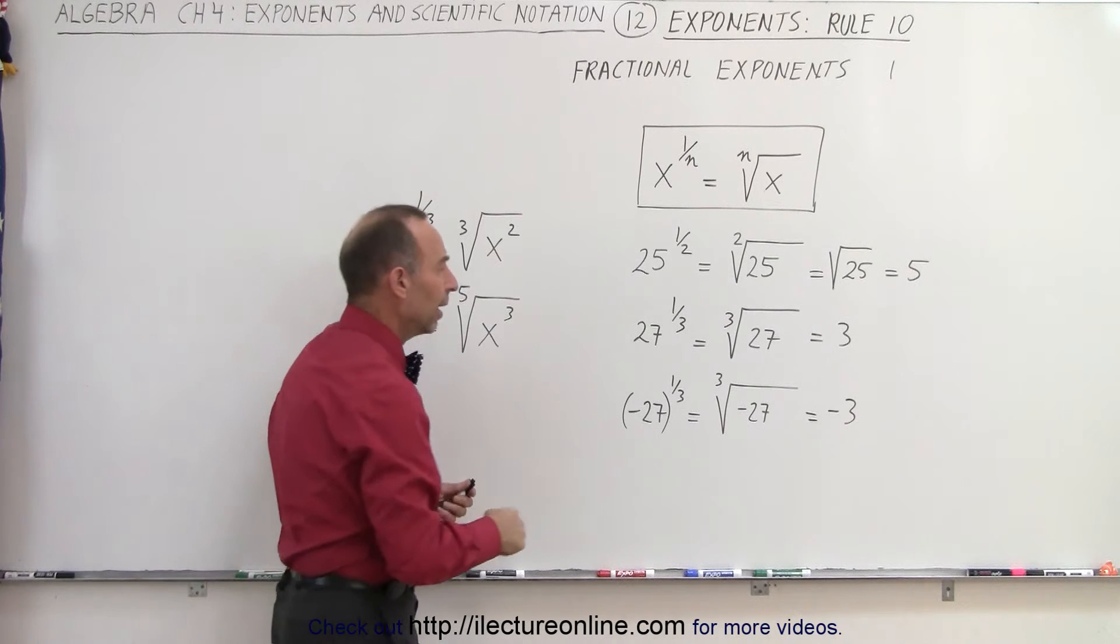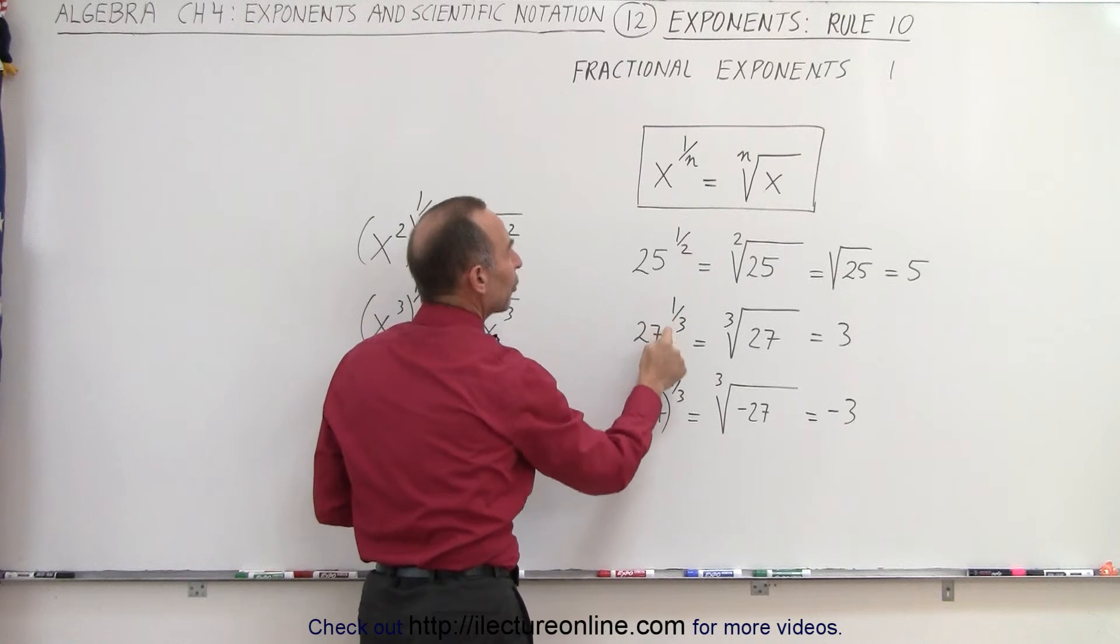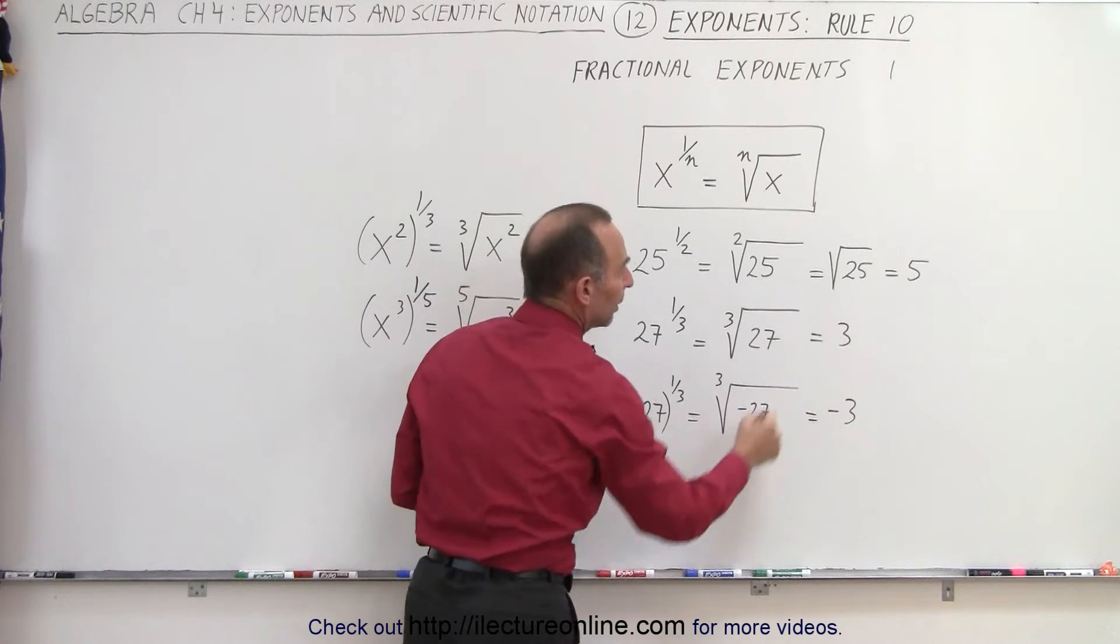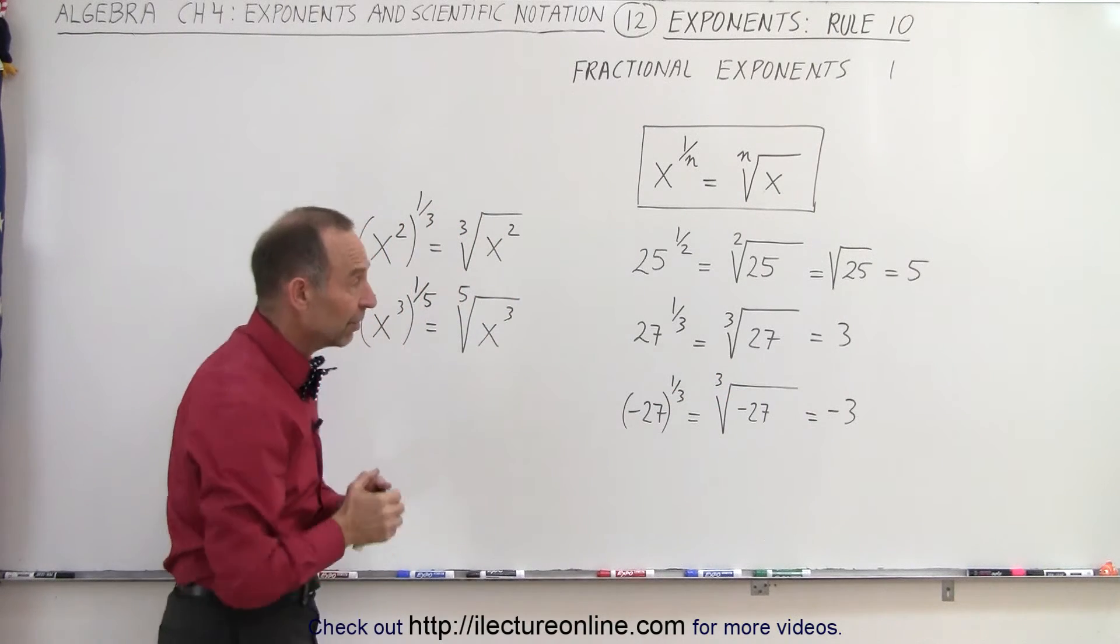To illustrate it better, 27 raised to the 1 third power is equal to the cube root of 27, which is equal to 3, because 3 times 3 times 3 is indeed 27.